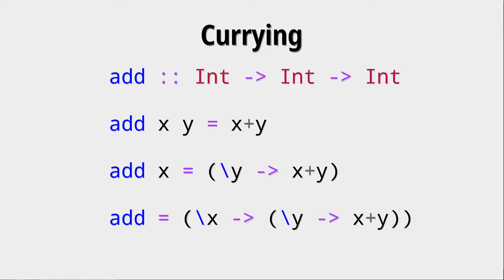This currying can be used to rewrite functions. Let's say we have this add function that takes two ints and returns an int. All of these three definitions are equivalent. Writing it x plus y is fine but we could abstract the first layer with an anonymous function or we could abstract the whole thing with two anonymous functions.